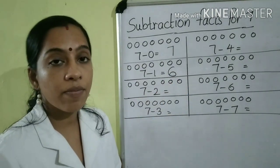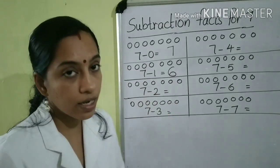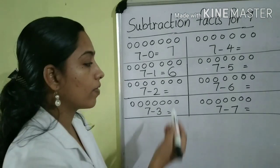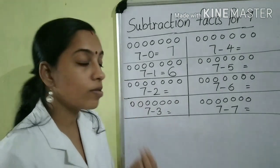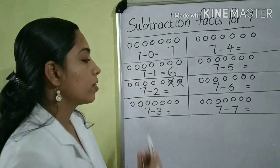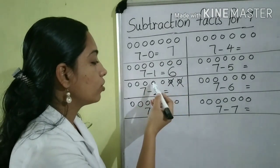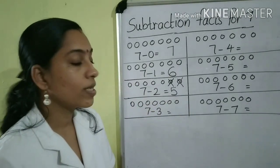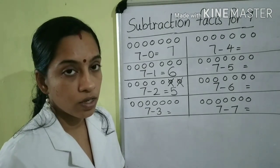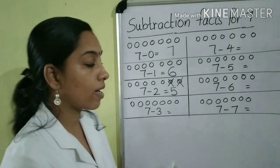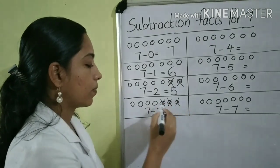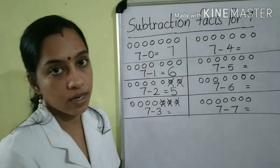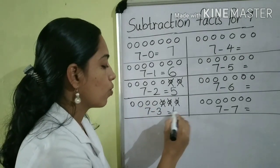Next, 7 minus 2. Here you can see 7 circles, so we can find out the number by crossing out. Cross out 2 circles: 1, 2. Then count how many circles are left: 1, 2, 3, 4, 5. So our answer is 5. Next, 7 minus 3 — cross out 3 circles: 1, 2, 3. How many circles are left? 1, 2, 3, 4 circles. That is, 7 minus 3 is equal to 4.